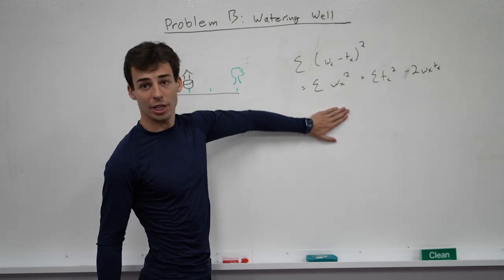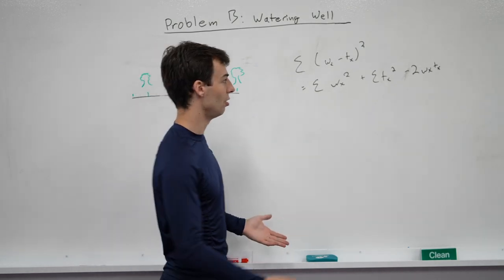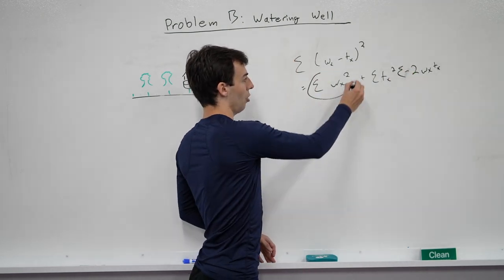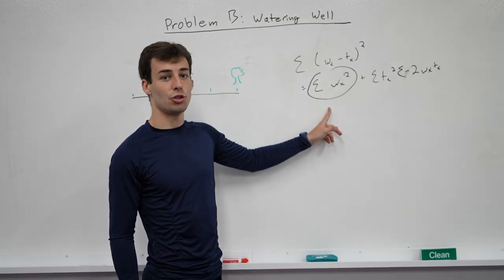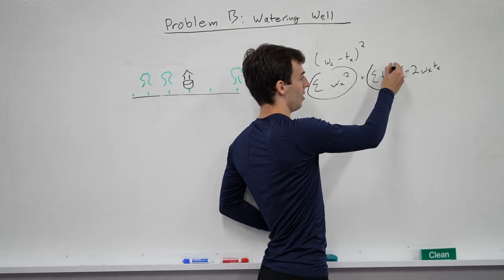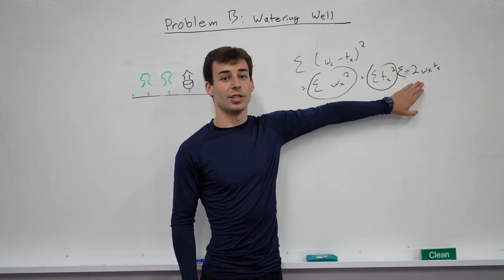So the important part about this formula is that we wind up with basically the solution. So this well part doesn't depend on the trees at all. And this tree part doesn't depend on the wells at all. The only thing we have left is just a linear term here.